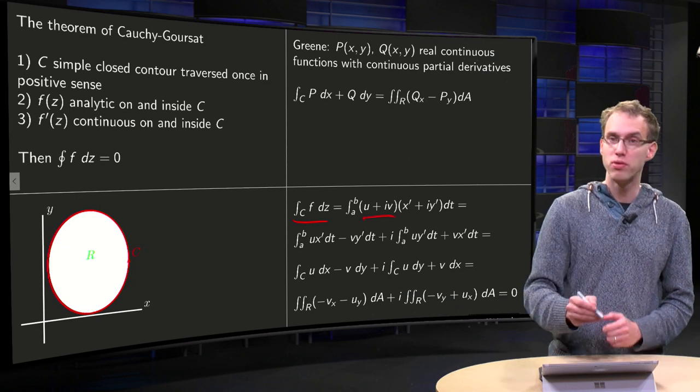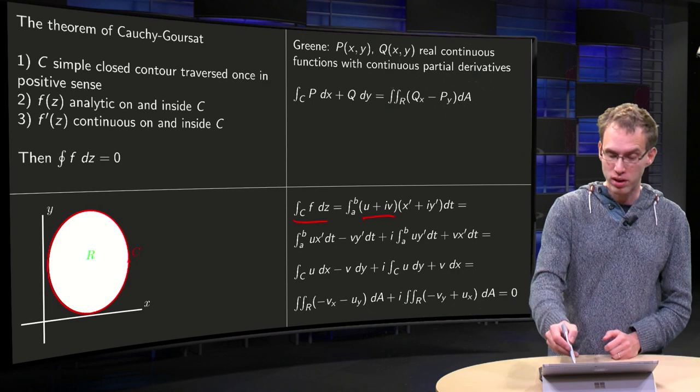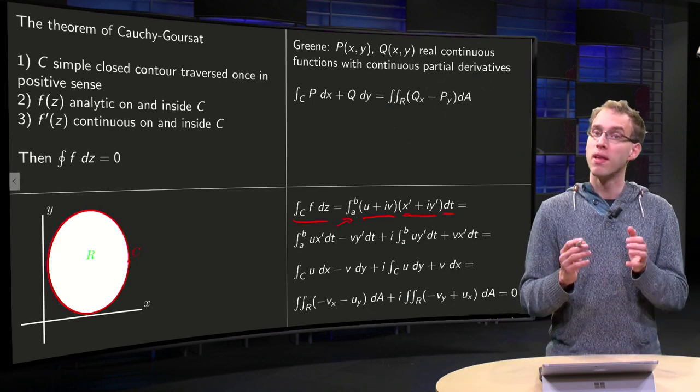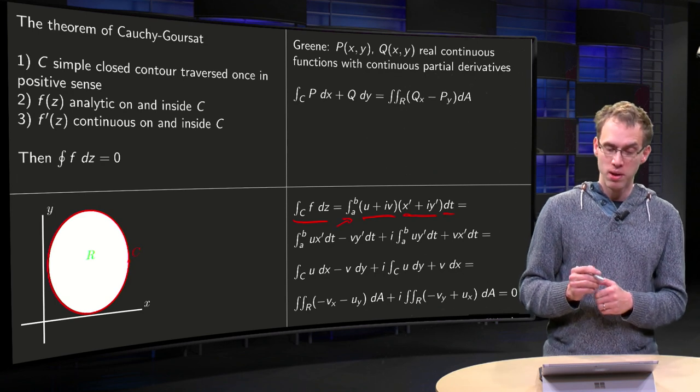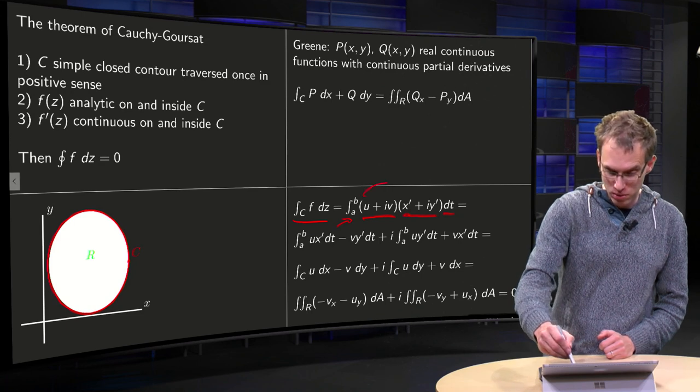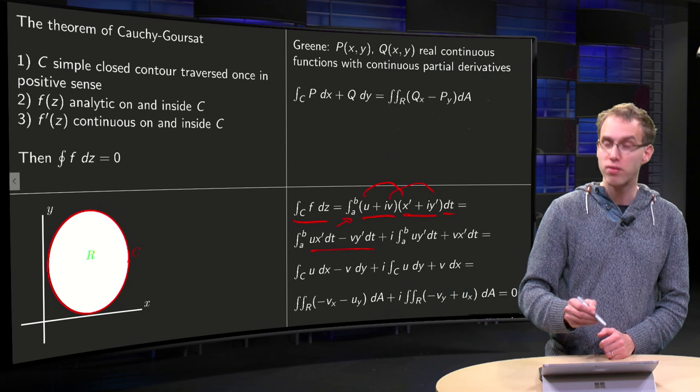F equals U plus i times V. You have to parametrize, and you get Z prime dT. So here we have our Z prime dT. And you have to integrate from A to B. That's if you parametrize C. Now what happens if you split this into real and imaginary parts? You get U times X prime minus V times Y prime dT. That's what we have over there.